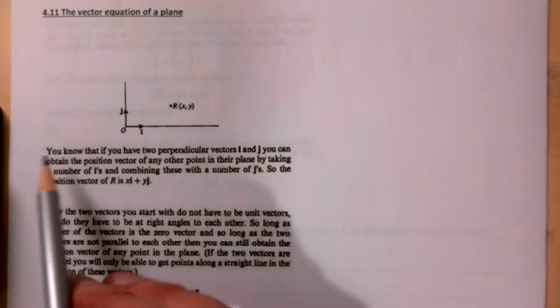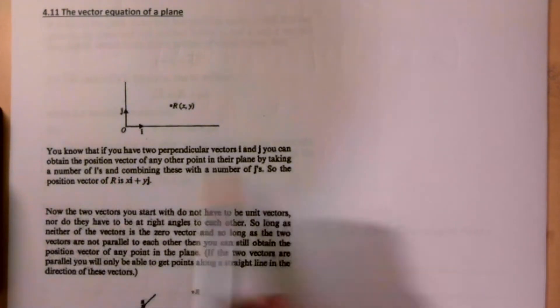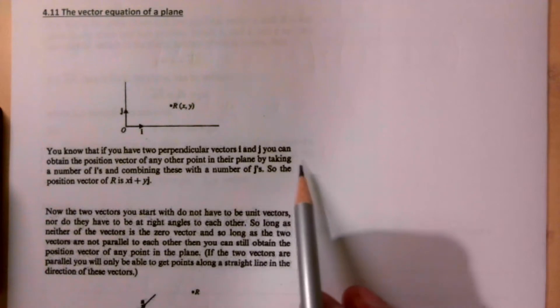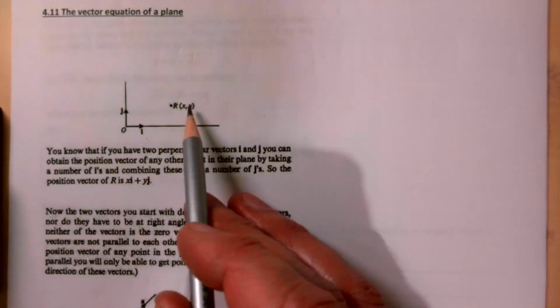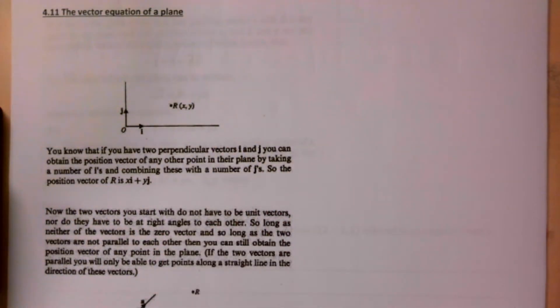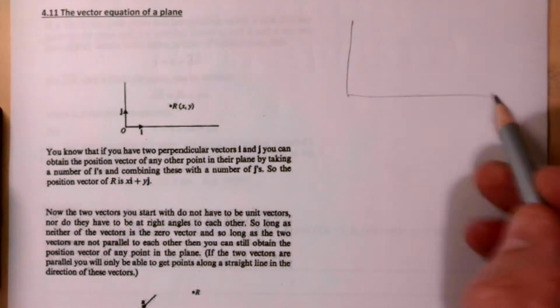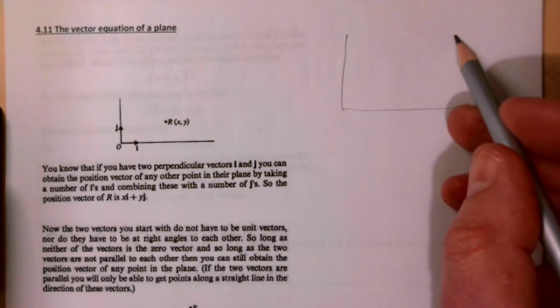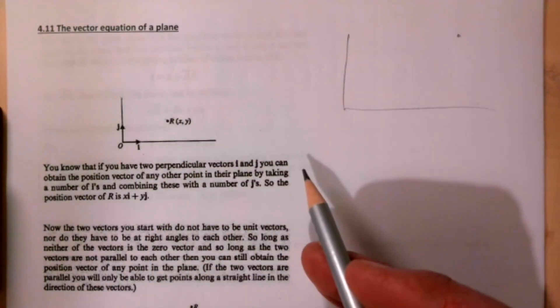If you have two perpendicular vectors i and j, you can obtain the position vector of any other point in their plane by taking a number of i's combined with a number of j's. So the position vector of r is xi plus yj. You can define any point by a certain amount of x's and a certain amount of y's.